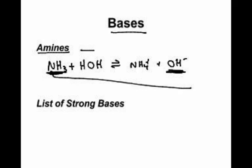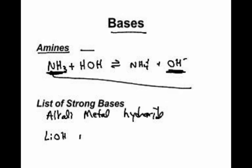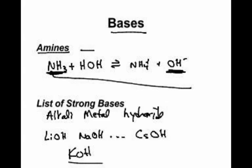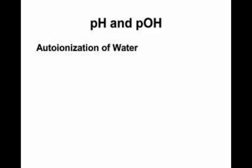Strong bases, frankly, there are just a few. Alkali metal hydroxides. What's an alkali metal? That's group one, like lithium, sodium, potassium, rubidium, cesium. If you go to column number one on the periodic table, excluding hydrogen, then you have lithium hydroxide, sodium hydroxide, down to cesium hydroxide. Common ones are lithium, sodium, and potassium hydroxide - those are the three big ones.